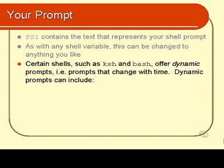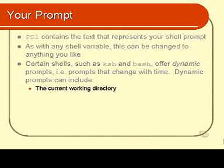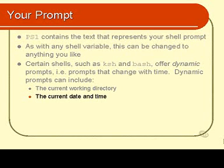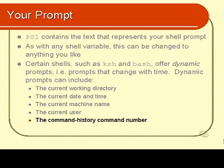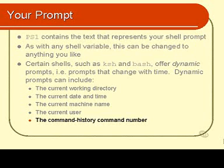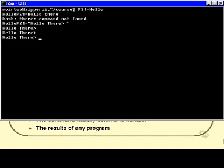The things you might want to include in a dynamic prompt are: the current working directory (we've seen that already), the current date and time, the current machine name, the current user, the current command history number, or the results of any program. Note that all of these will work in Bash, which is what I'm demonstrating, but they won't necessarily work in any other shell.